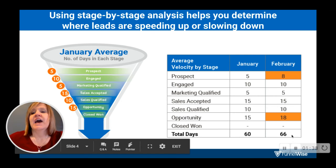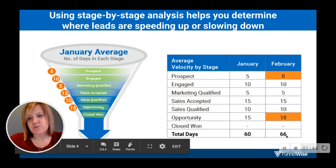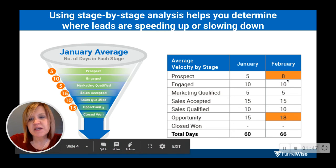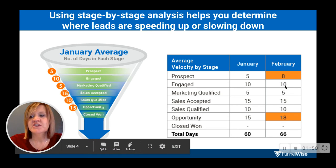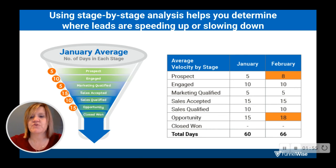When you compare that to the next month in February, you see the days increased by 66. But where did it take longer? Only by doing that stage-by-stage analysis are you able to identify those areas to optimize and really achieve exceptional velocity performance.